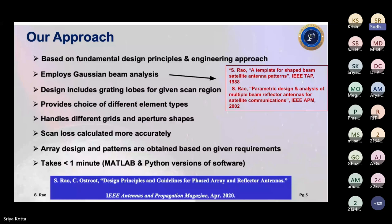The tool handles different grids and aperture shapes — for example, square grid or hexagonal grid, and circular, square, or hexagonal apertures. Scan loss is calculated more accurately. For a given coverage, to estimate worst-case gain you need to include scan loss. The array design parameters are obtained — size, spacing, etc. — for given requirements like directivity. Patterns are also obtained as envelope patterns: it's not exact patterns but gives an envelope for main beam, near inside lobes, and far outside lobes. The whole computation takes less than a minute. It was initially developed in MATLAB, and a Python version is also included.